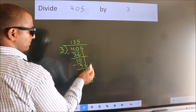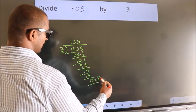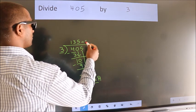No more numbers to bring it down. So, we stop here. This is our remainder. This is our quotient.